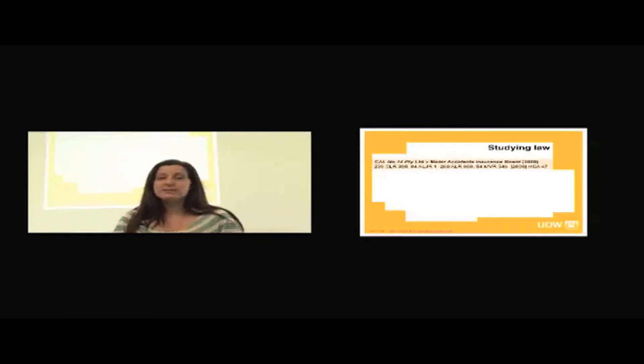The numbers that you see underneath can look quite intimidating if you don't understand what they mean, but they're really just different reference systems for finding this story. So, you take the first set of numbers, 239 CLR 390. 239 just means go to volume 239. CLR is the Commonwealth Law Reports and 390 means page 390. So, it's as simple as that.